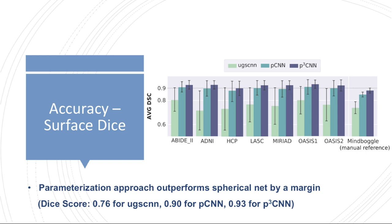Surprisingly, we see that the spherical CNN approach shown in green reached the lowest Dice across all datasets with an average of 0.76, and is already outperformed by the simple parameterization approach, in spite of the non-linear distortions induced by the latitude co-latitude parameterization. In addition, the final view aggregation improves the consistency of the segmentation, as the variation between subjects is lower.